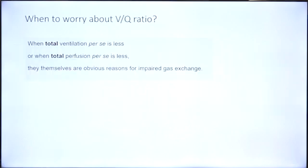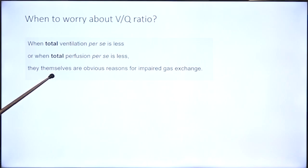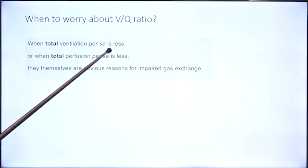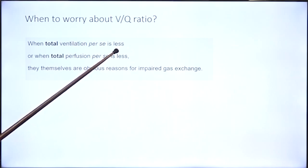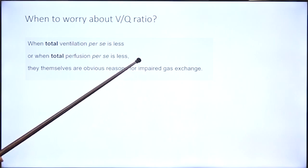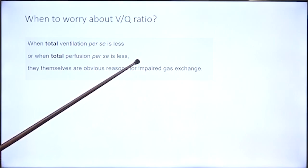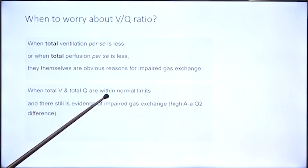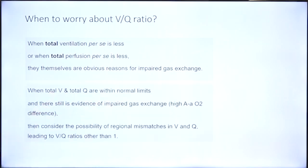When do we worry about VQ ratio? When total ventilation is normal and total perfusion is normal and we still see a reduction in oxygen transfer — that is when we consider VQ mismatch. When total ventilation per se is less, that itself is a cause of respiratory failure — type 2 respiratory failure. When total perfusion is less, there is no abnormality in arterial PO2 or PCO2. When both are within normal limits and there is still evidence of impaired gas exchange, that is when we consider the possibility of accentuated VQ mismatch in different regions of the lung.